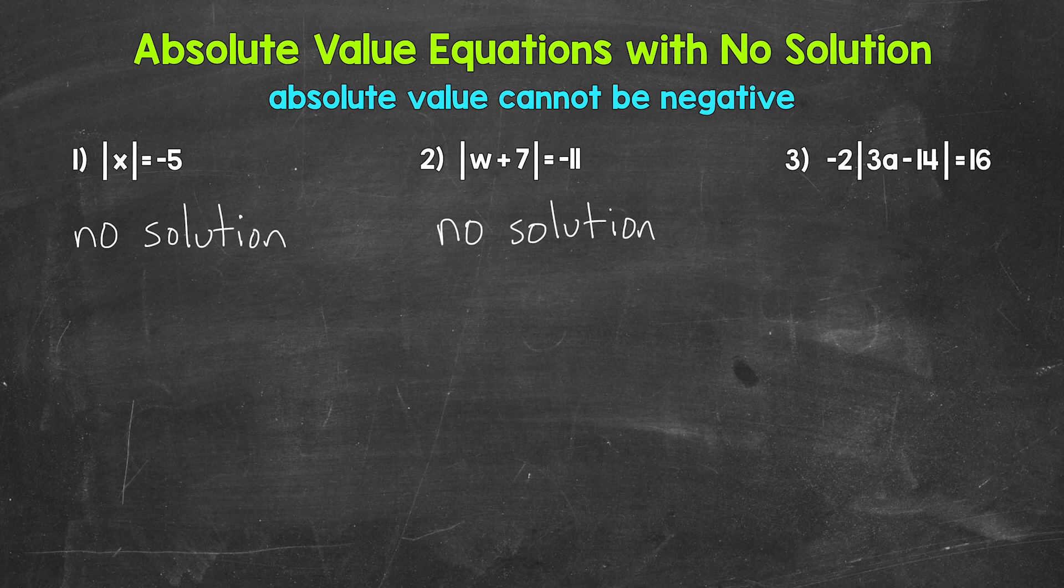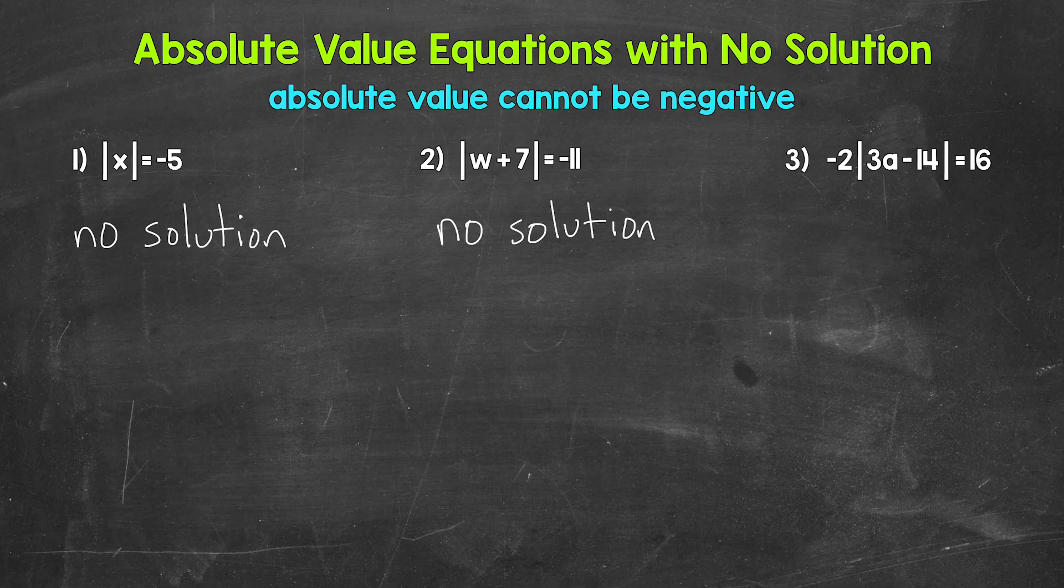Now for this one, it doesn't equal a negative, but the absolute value hasn't been isolated yet. That's our first step. Whenever we have an absolute value equation, we need to get the absolute value by itself on one side of the equation. So let's use the inverse operation here and divide the left side by negative two. That means we need to divide the right side by negative two as well.